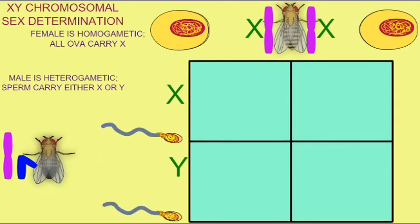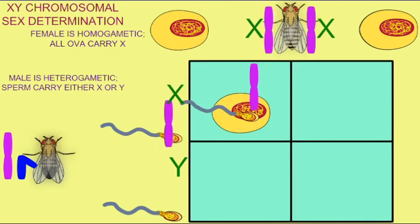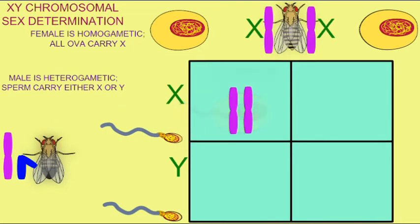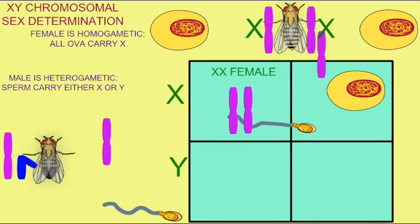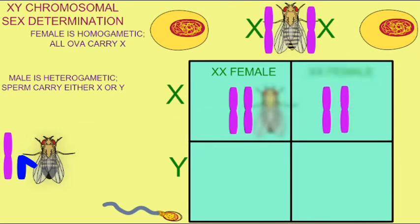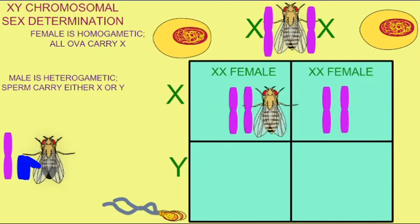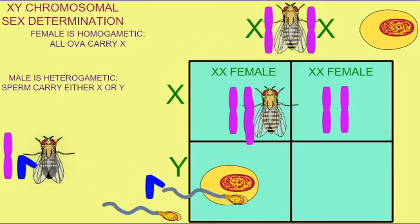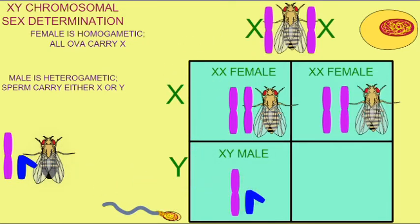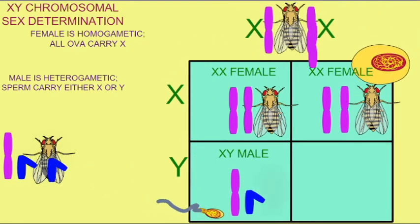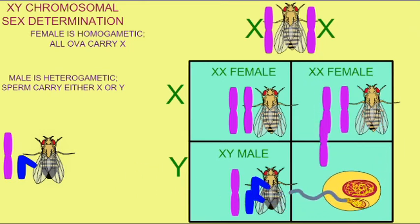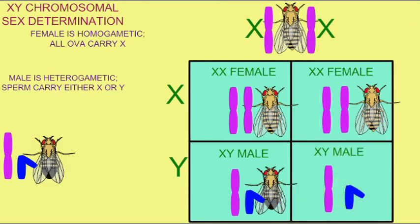It should be noted that while flies and humans, and other organisms such as some reptiles, possess an XY gender determination system, their X chromosomes and Y chromosomes are not homologous. The Y chromosome possessed in mammals evolved in ancestral mammals, and so the Y chromosome of flies is not homologous.